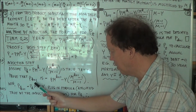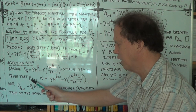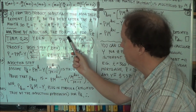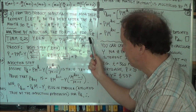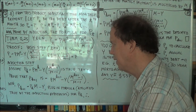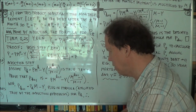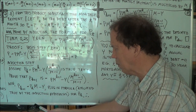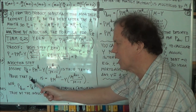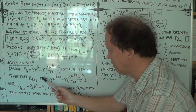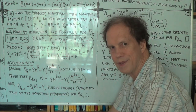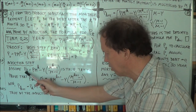Now, what do we have to do? We have to show that if the formula is true for K, it's also true for K plus one. According to the formula for K plus one, you put K plus one in place of T. This is the debt after K plus one months — that's what we're trying to show equals the formula. We assume we know what the debt is after K months from the inductive hypothesis.